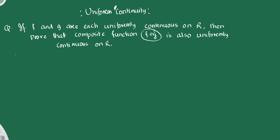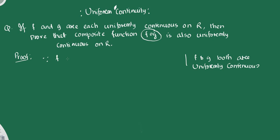Let's prove it. The proof is hard but the concept is clear. Let's work with epsilon and delta. We have given that f and z are both uniformly continuous. Since f and z are uniformly continuous, we apply the definition.